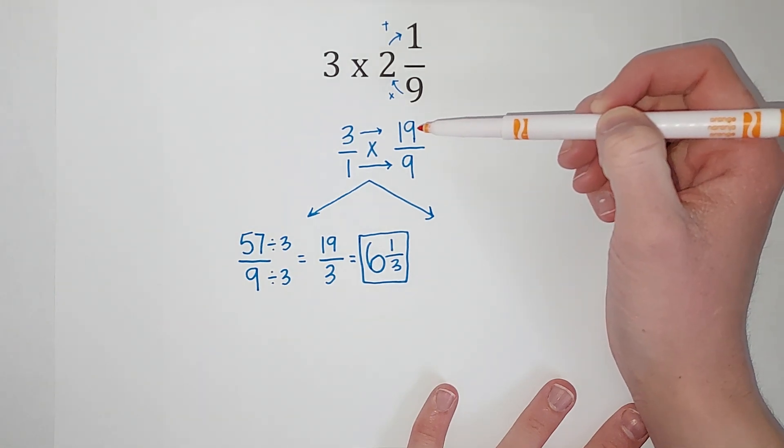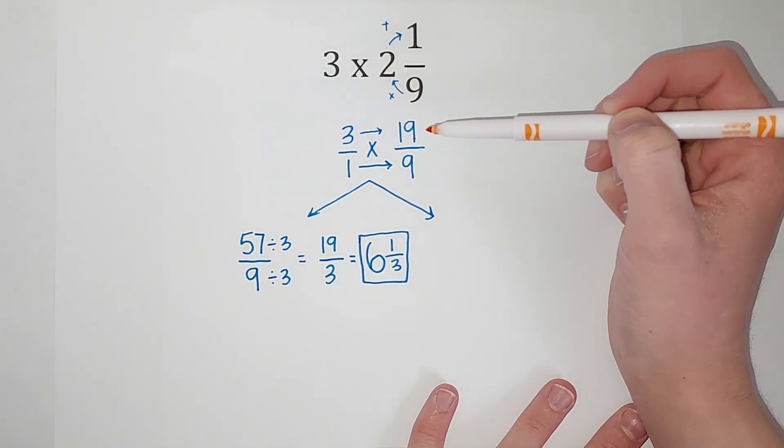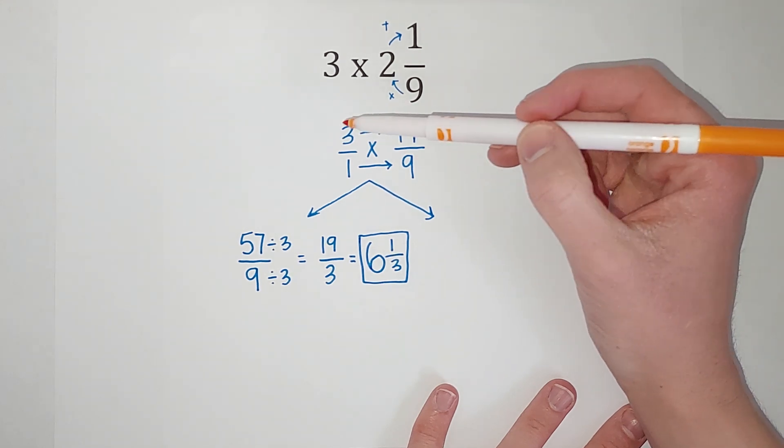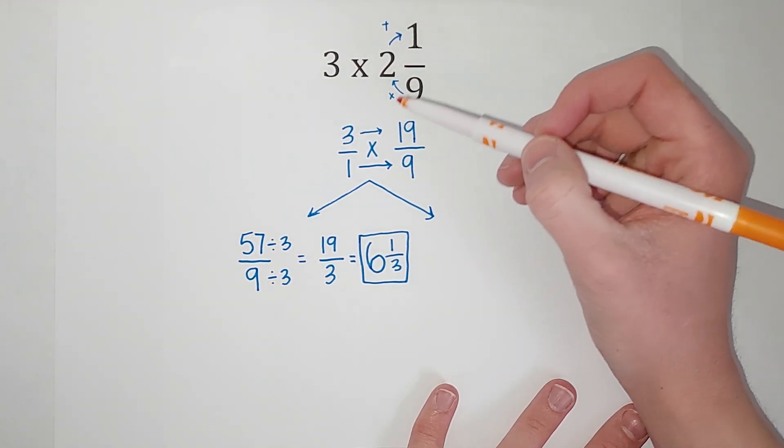And you notice if anything can cancel from the top with anything on the bottom. So I notice 3 and 9.